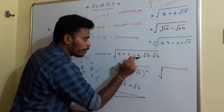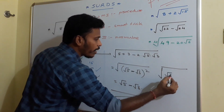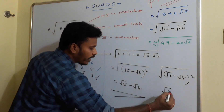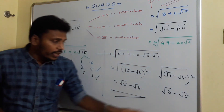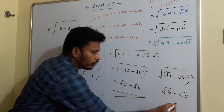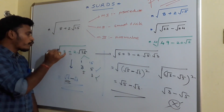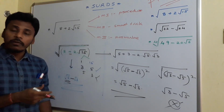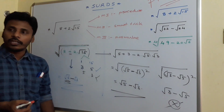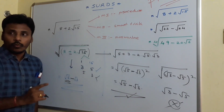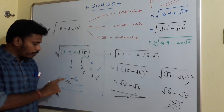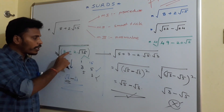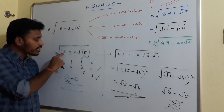Note that you could also write it as root 3 minus root 5 whole square, but root 3 minus root 5 is negative, which is not valid since a square root is always positive. So always take the larger number first: if the sign is plus, your answer is root 5 plus root 3; if the sign is minus, your answer is root 5 minus root 3.